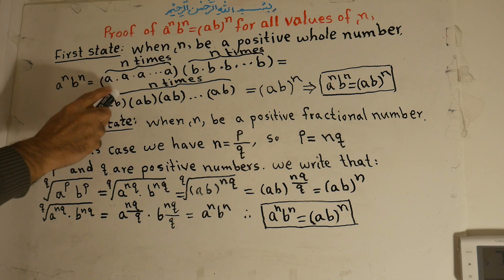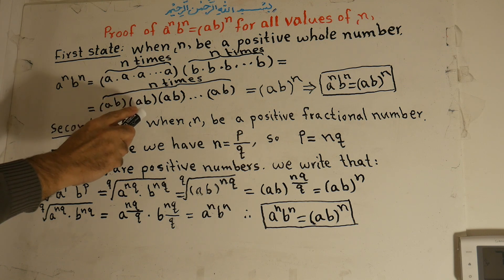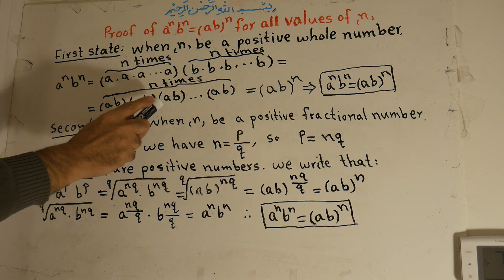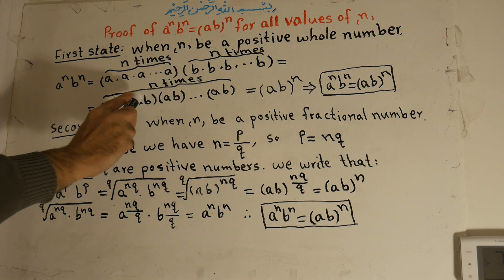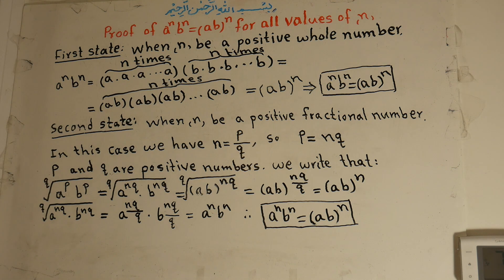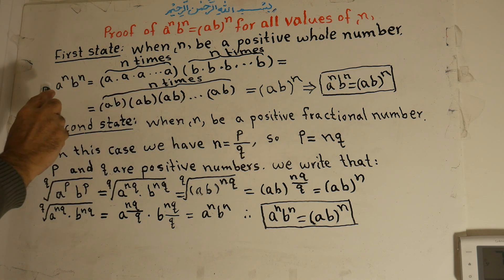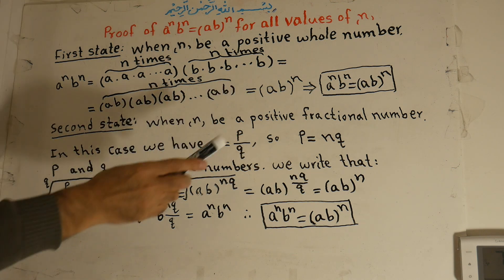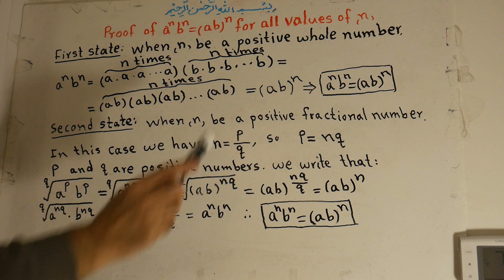That is equal to ab times ab times ab times ab, n times. And so a to the power of n times b to the power of n is equal to ab, all to the power of n.